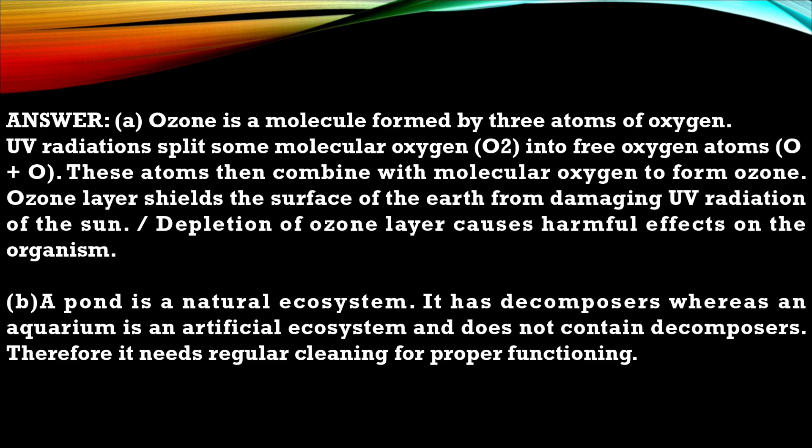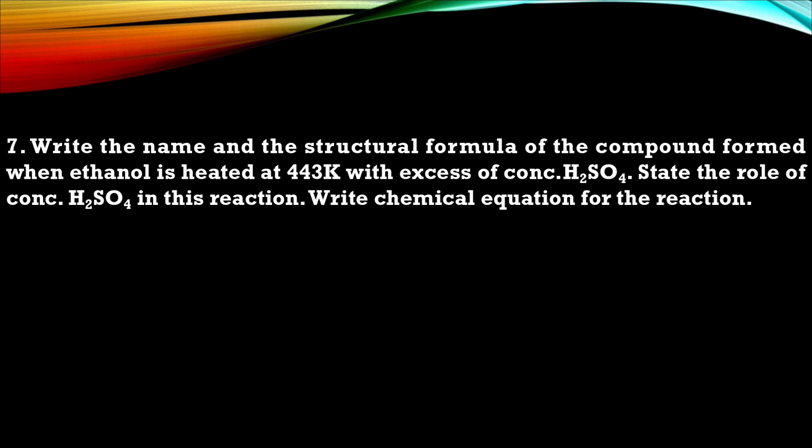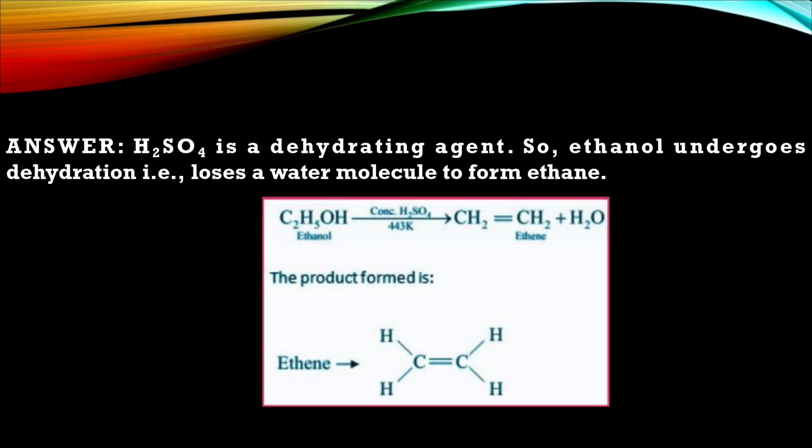Next question number 7. Write the name and structural formula of the compound formed when ethanol is heated at 443 Kelvin with excess of concentrated H2SO4. State the role of concentrated H2SO4 in this reaction. Write chemical equation for the reaction. So this is the solution with chemical reaction. Write complete structure as well.